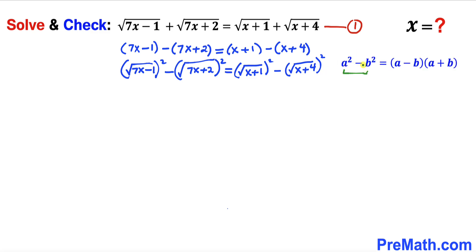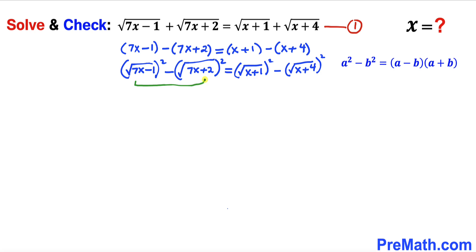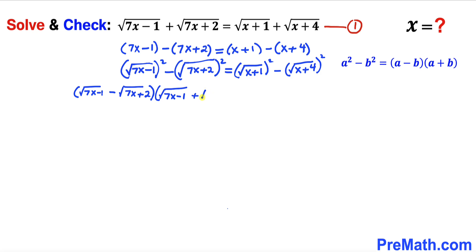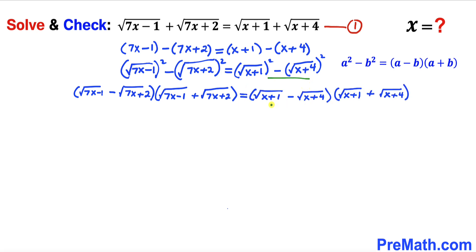Now let's recall the famous identity: a² minus b² equals (a minus b)(a plus b). We apply this difference-of-squares identity to both sides of the equation. The left-hand side becomes (√(7x minus 1) minus √(7x plus 2)) times (√(7x minus 1) plus √(7x plus 2)), and likewise the right-hand side becomes the product of the corresponding difference and sum.